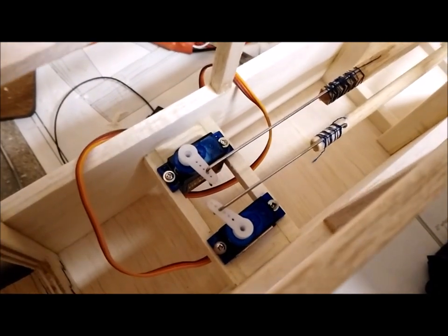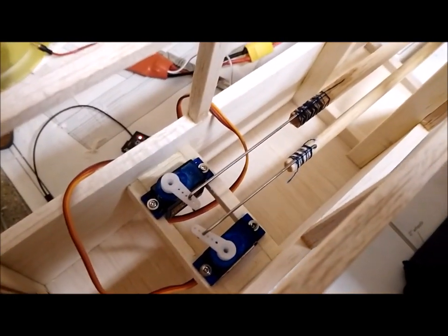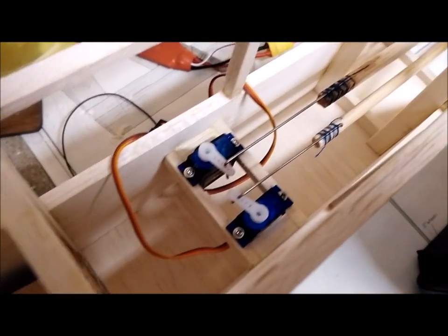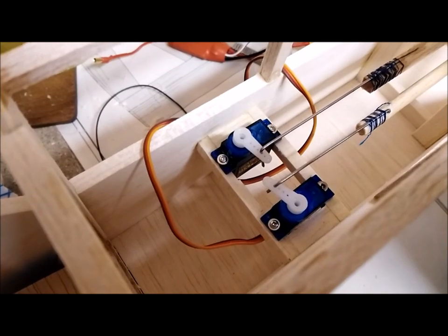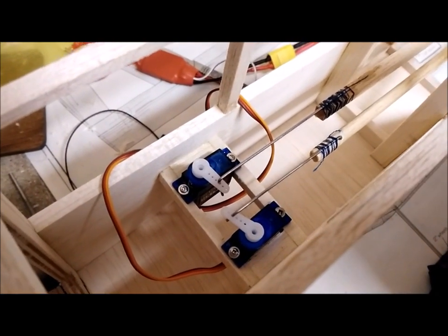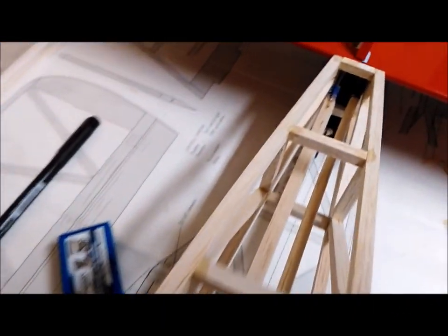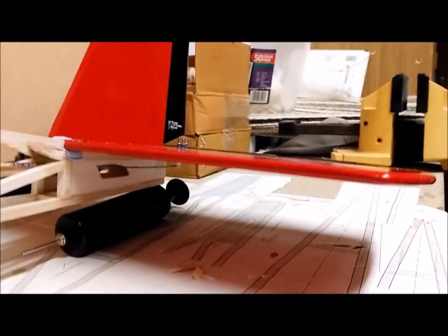Now I have both servos screwed into the cross beams and I have inserted the push rods. I haven't fully connected them at the front but I've just dropped them through the servo arms just to make sure that everything is moving and it's not binding. The push rods go down through the rear and out the underside there.